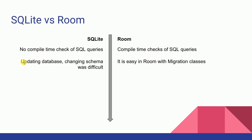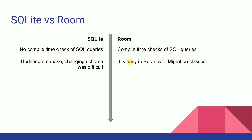In the case of SQLite, updating or changing the database schema was very difficult, but in the case of Room we can create migration classes to upgrade our database. In the case of SQLite, converting SQL queries to Java objects is very difficult and requires too much boilerplate code, but in the case of Room mapping SQL data to Java objects is very easy and it removes almost all the boilerplate code that we had with SQLite.